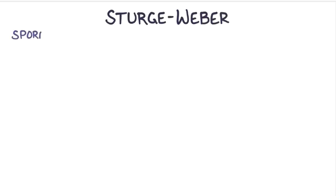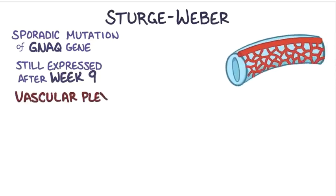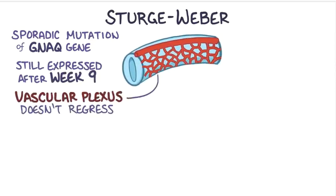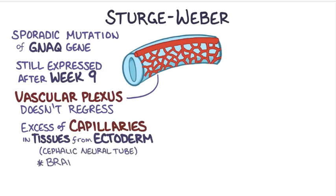In Sturge-Weber syndrome, a sporadic mutation happens in the GNAQ gene during embryonic development, and that keeps the GNAQ protein getting expressed even after week 9 of development. As a result, the vascular plexus doesn't regress like normal, and there ends up being an excess of capillaries in tissues that derive from the ectoderm, specifically those from the cephalic portion of the neural tube, like the brain, eyes, and skin on the face.